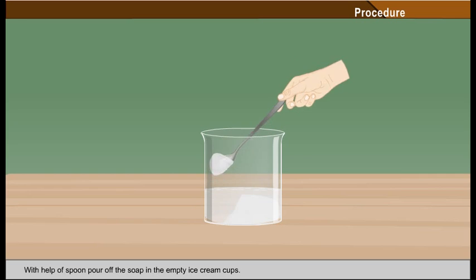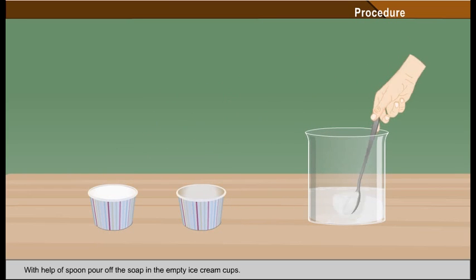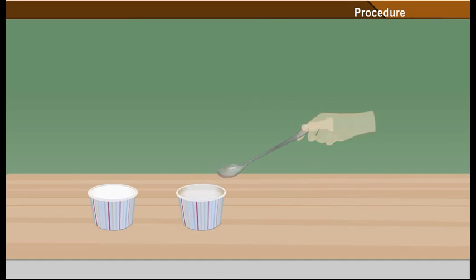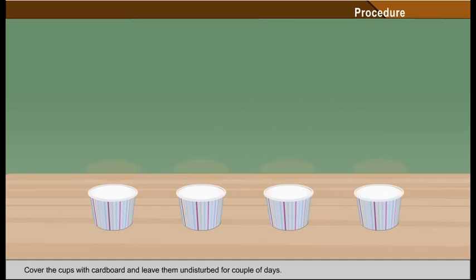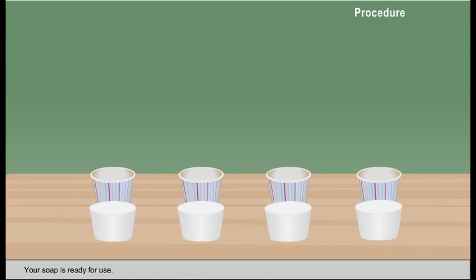With help of a spoon, pour off the soap in the empty ice cream cups. Cover the cups with cardboard and leave them undisturbed for couple of days. Your soap is ready for use.